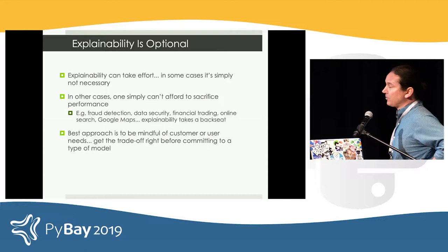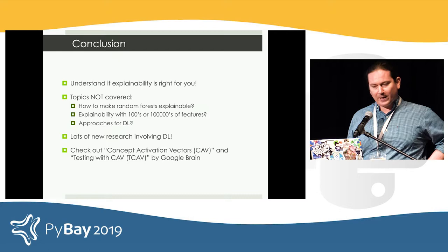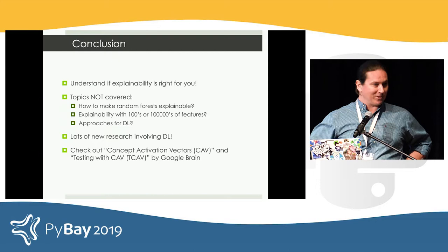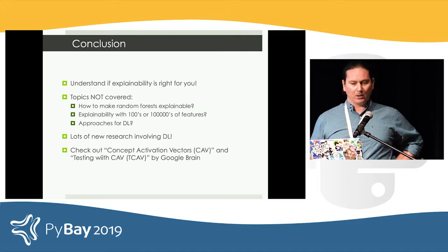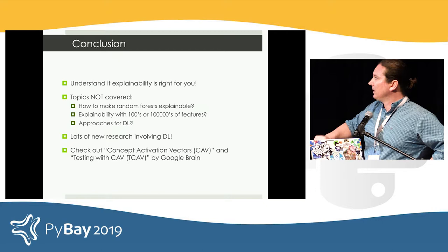In conclusion, understand if explainability is right for you. Some things I didn't discuss: how to make a random forest explainable — takes a little bit of work. Explainability with hundreds or hundreds of thousands of features — you can do it, also takes some work. And there are some really cool approaches recently for making deep nets explainable. There's some great research by Google Brain — if you look for concept activation vectors and testing with concept activation vectors, there are a couple of cool papers there. Thank you.